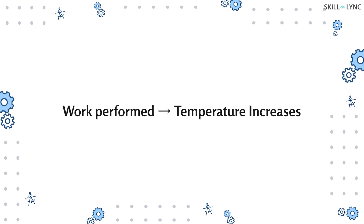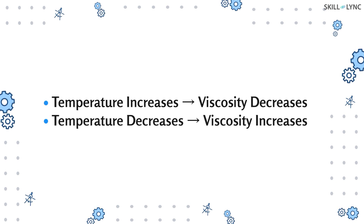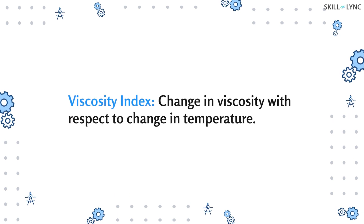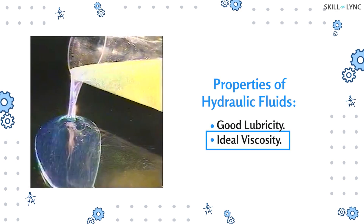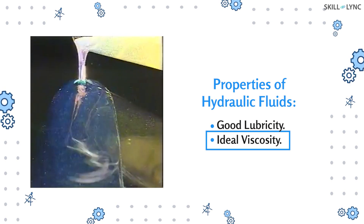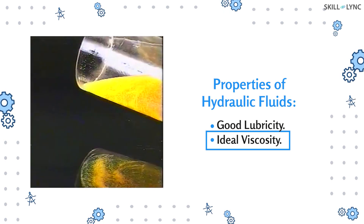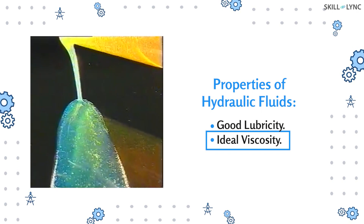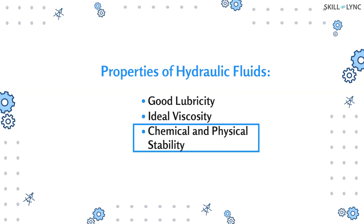As the hydraulic system performs work, the temperature of the system rises, which affects the viscosity of the hydraulic fluid. On increasing the temperature, the viscosity of the liquid decreases, and vice versa. This change in viscosity due to temperature is measured by the viscosity index of the fluid. A hydraulic fluid with a low viscosity index will have a large change in viscosity with the corresponding change in temperature. On the other hand, a fluid with a high viscosity index will have a small change in viscosity.